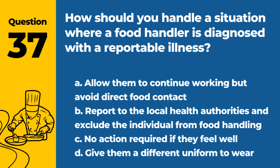Question 37. How should you handle a situation where a food handler is diagnosed with a reportable illness? A. Allow them to continue working, but avoid direct food contact. B. Report to the local health authorities and exclude the individual from food handling. C. No action required if they feel well. D. Give them a different uniform to wear. Answer: B. Report to the local health authorities and exclude the individual from food handling. When a food handler is diagnosed with a reportable illness, it should be reported to local health authorities, and the individual should be excluded from food handling to prevent contamination.